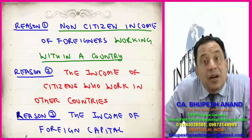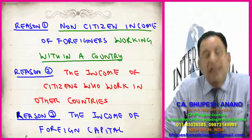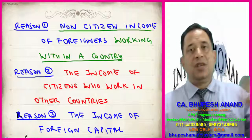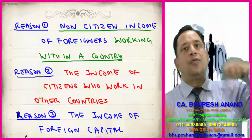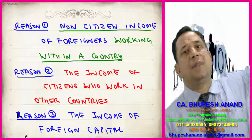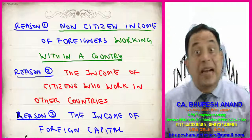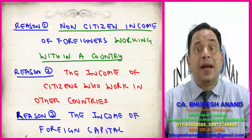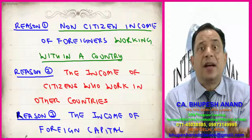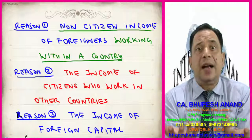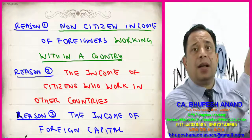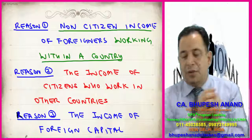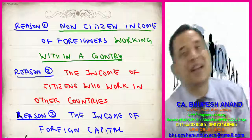Reason two: the income of citizens who work in other countries. For example, Mr. Ramlal is a citizen of India working in Israel, Pakistan, or USA — earning income there. Similarly, Mr. Pillai, a citizen of India, is getting income from USA — so it will be part of GNP. The second point is the income of citizens who work in other countries.